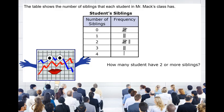In this problem, the table shows the number of siblings that each student in Mr. Mack's class has. How many students have two or more siblings?